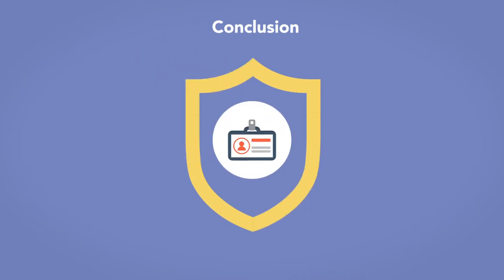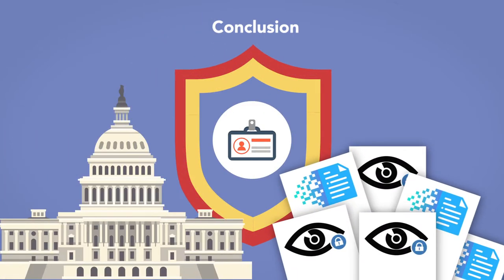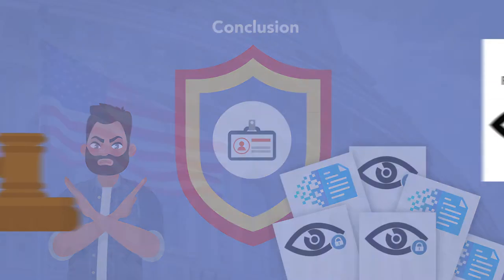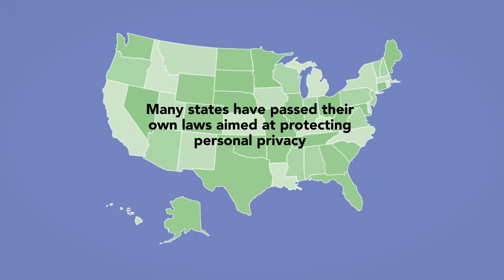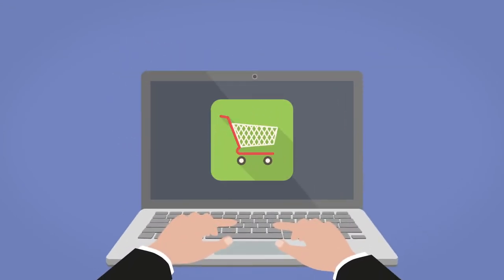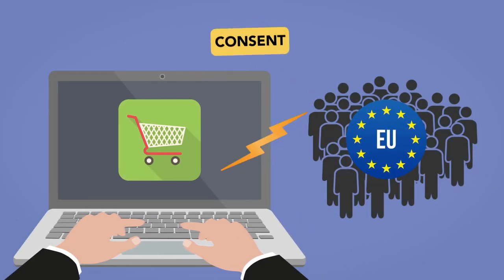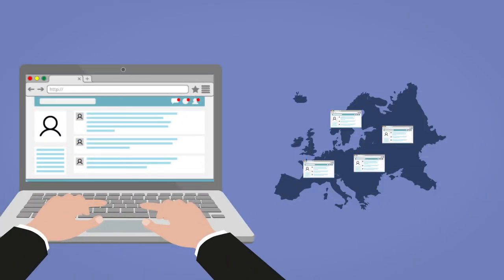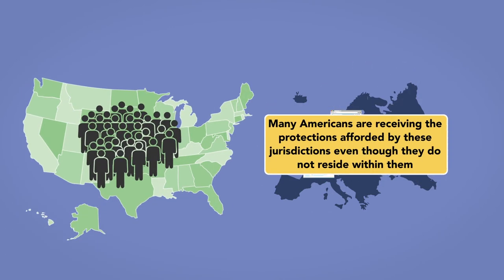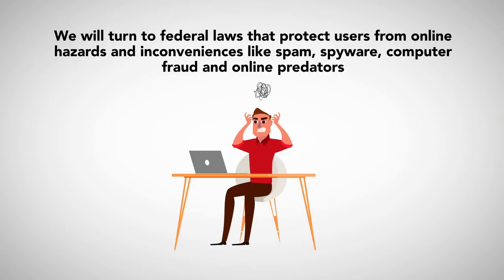In conclusion, there is no uniform legal structure to safeguard online privacy. While Congress has passed laws preventing unauthorized access or use of electronic information by the federal government, non-compliance appears to be a major challenge to enforcement, and attempts at strengthening federal electronic privacy protections have not been enacted. Still, many states have passed their own laws aimed at protecting personal privacy. E-commerce sites that allow access to users from the European Union must now receive consent before collecting private information, and because many websites are active in Europe, California, and jurisdictions with similar privacy protection laws, many Americans are receiving protections afforded by those jurisdictions even though they do not reside within them.